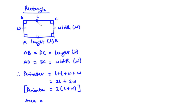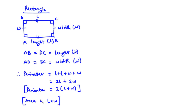Now let's talk about the area. The area is the region bounded by the rectangle, so we are going to multiply the length by the width. The area equals length times width. Note that area is measured in square units — so if the length and width are in meters, the area is in meters squared.